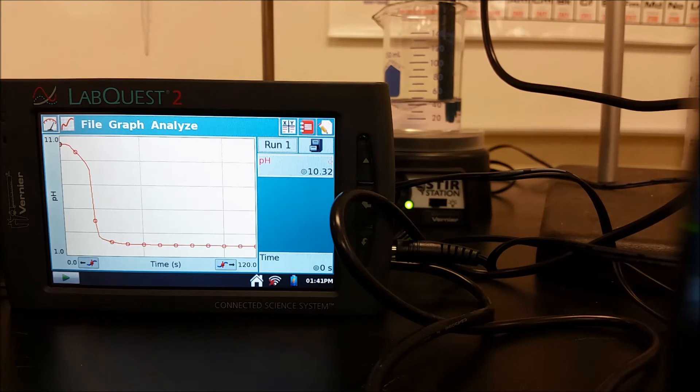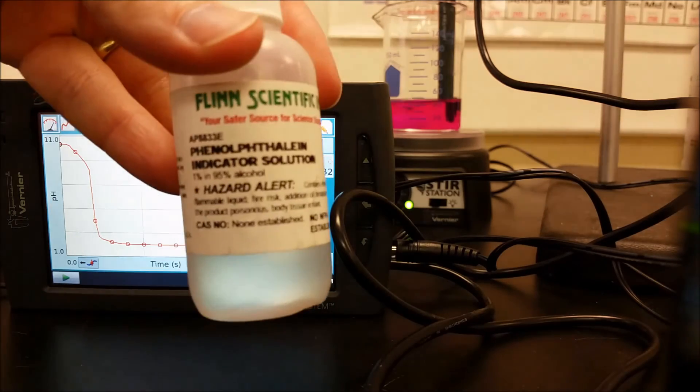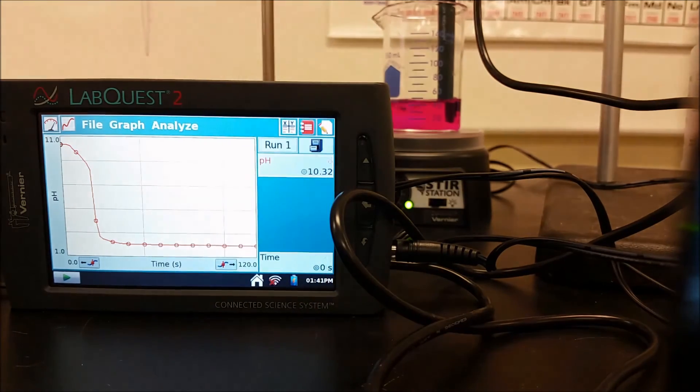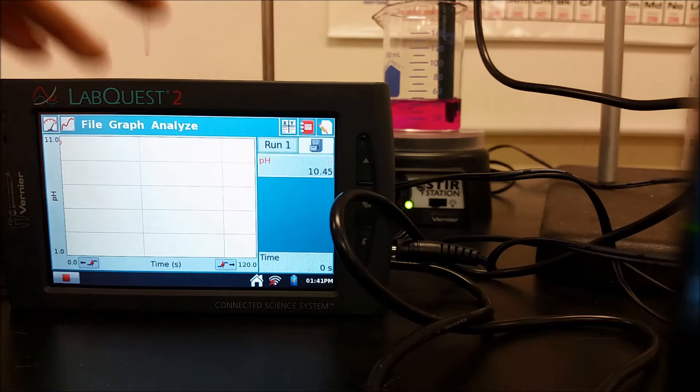In this next example, we're going to run the opposite titration. Now we're doing a weak base with a strong acid being added to it. So now I'm using the phenolphthalein again, but this time when I run the titration, we're going to see that the phenolphthalein is not a good choice for this particular titration.